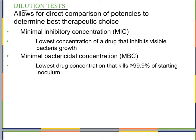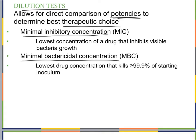Dilution tests are somewhat better in certain ways because they allow a direct comparison of potencies to determine the best therapeutic choice. Following a Kirby-Bauer assay, we can move to dilution testing to learn our minimal inhibitory concentration (MIC) — the lowest concentration of a particular antimicrobial that can inhibit bacterial growth — and the minimal bactericidal concentration (MBC) — the lowest concentration that kills 99.9% or more of the starting inoculum.